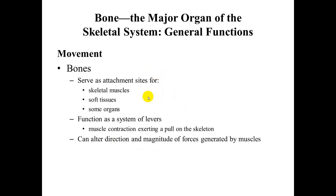As for movement, bones serve as attachment sites for skeletal muscle, soft tissues, and some organs. They function as a system of levers — as muscles pull on the levers, they move the organism. The bones also allow for altering the direction and magnitude of forces generated by the muscles.